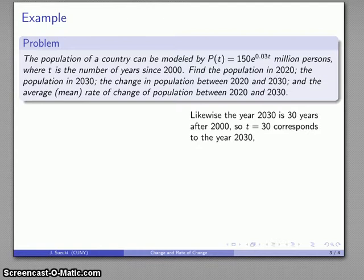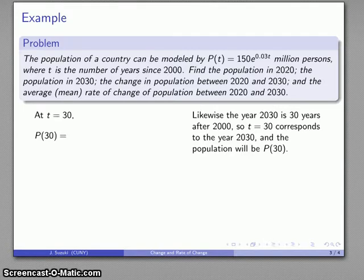Likewise, if I look at the year 2030, that's 30 years after 2000, so t equals 30 corresponds to the year 2030. The population will be P(30), and substituting that in gives 369 million persons. These are computations that are typical of pre-calculus.